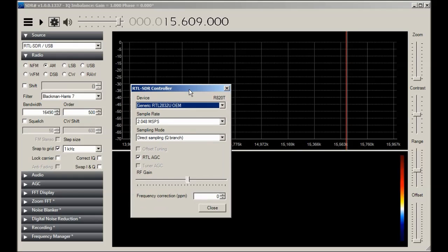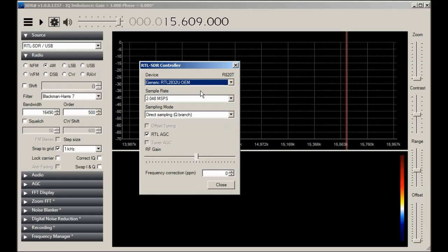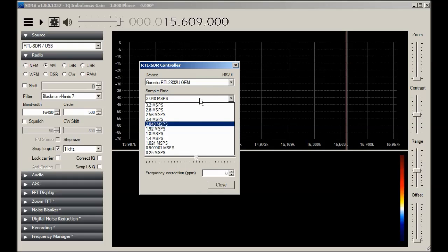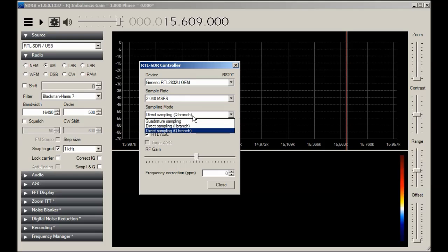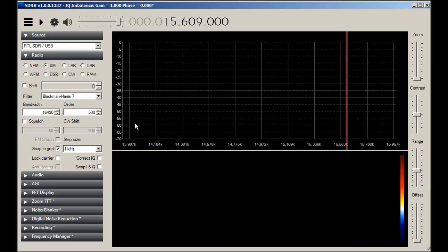So first things first, before you start clicking away, is hit that gear. In this dialog, select your device, select the sample rate that the device gave, which for this one was 2.048 msps. And this is critical: direct sampling Q branch is the setting to set there. I originally tried quadrature sampling and that gave me lots of pain and did not work. So direct sampling Q branch, click on RTL AGC, and you are good to go. Click on close. Now we can click start.